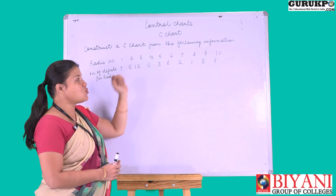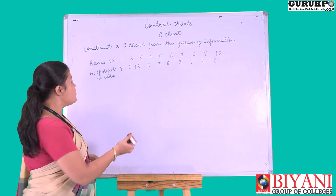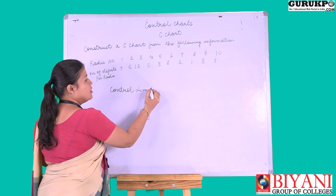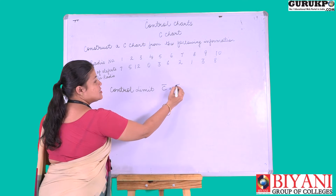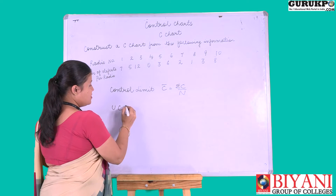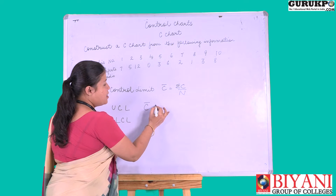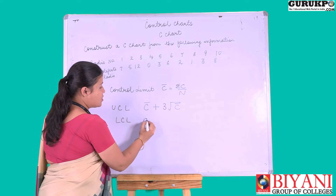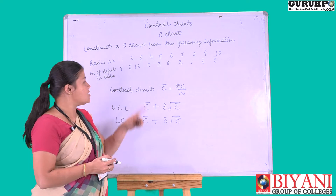In every control chart we have to calculate three particular items. First is the control limit — the formula for control limit is c-bar. The next one is the upper control limit, and the lower control limit. The formula for upper control limit is c-bar plus 3 times the square root of c-bar, and lower control limit is c-bar minus 3 times the square root of c-bar.